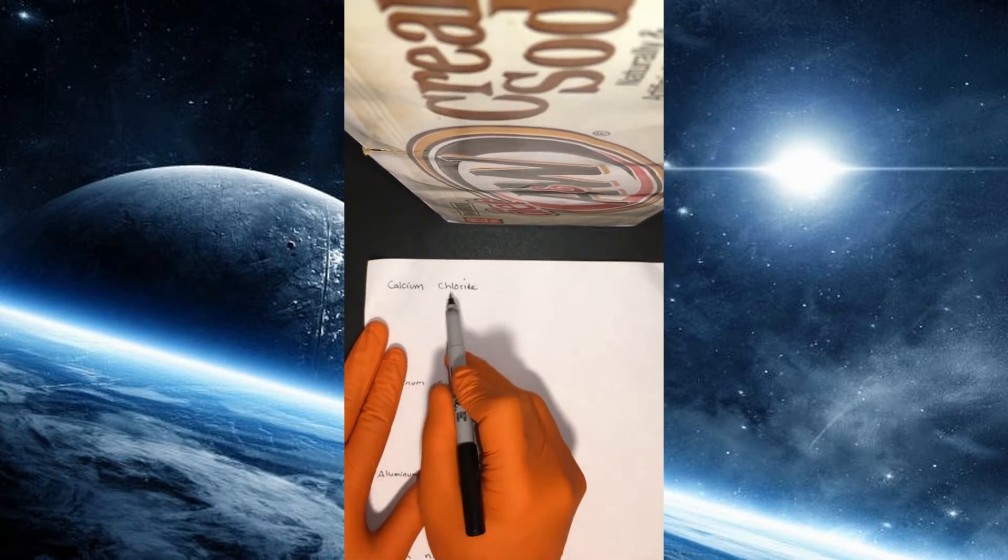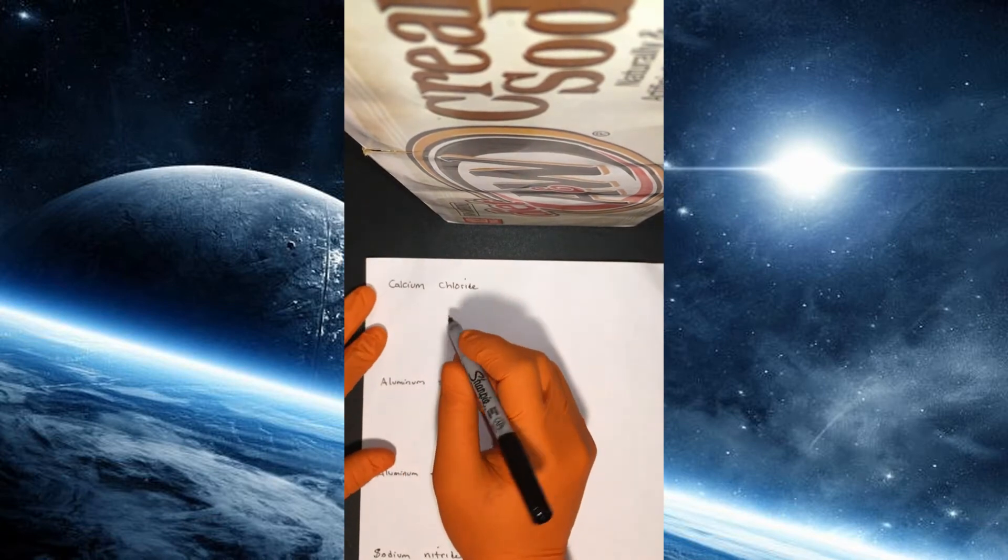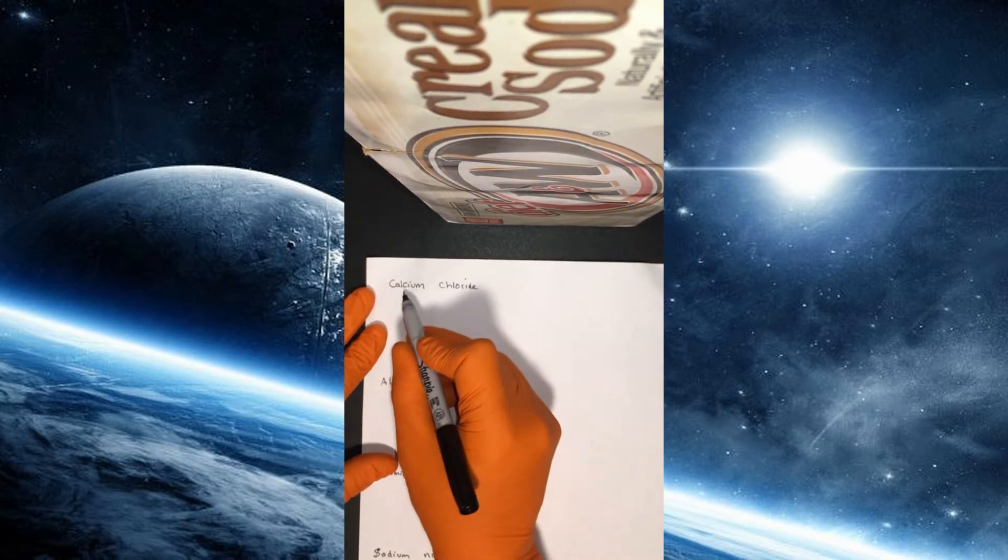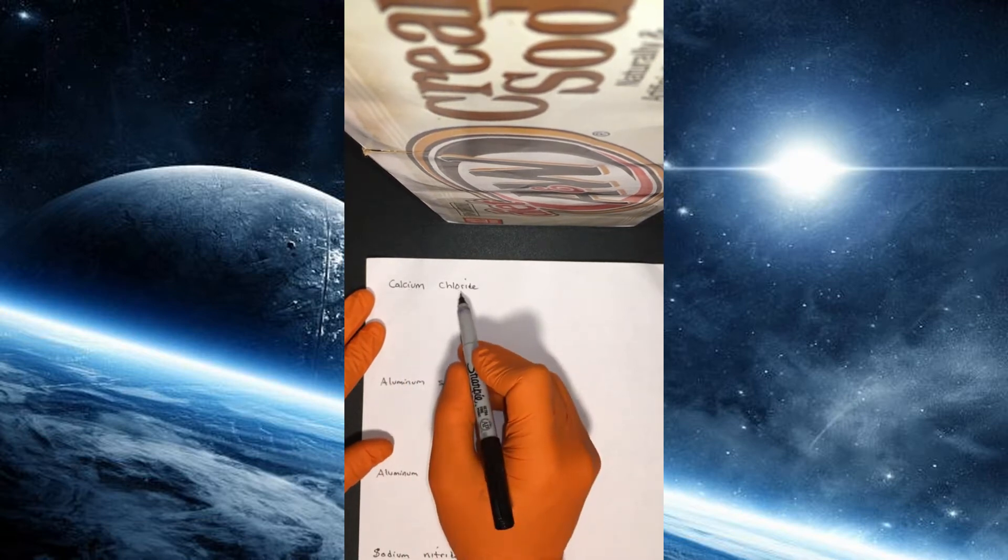So here's our first example, calcium chloride. In this example, the first thing we want to do is determine the individual ions that represent the calcium and the chloride.